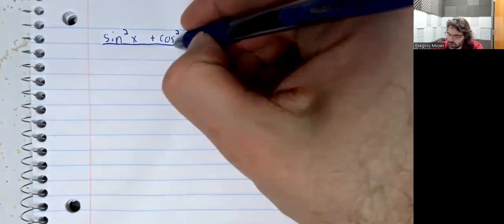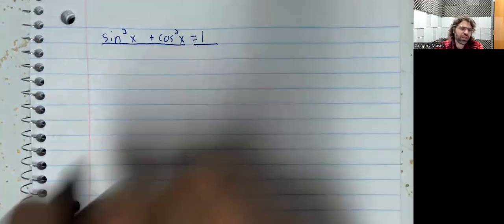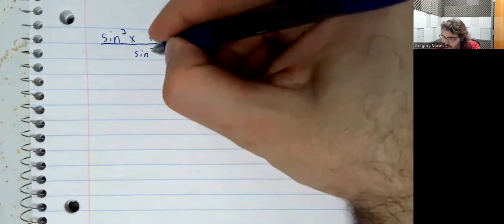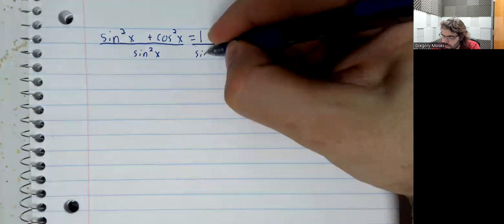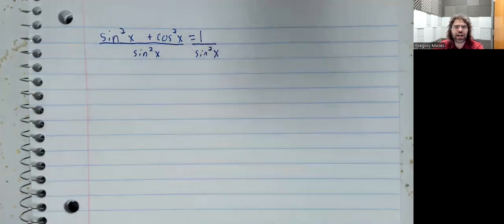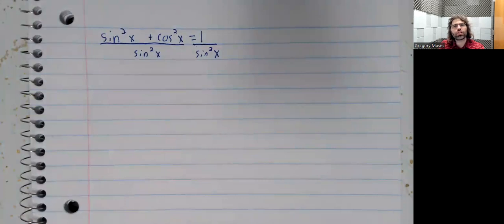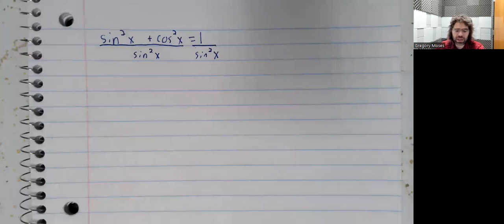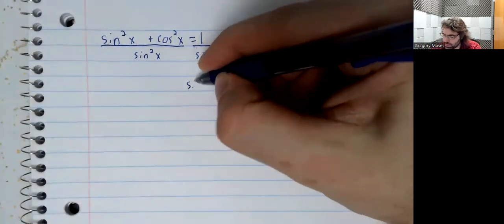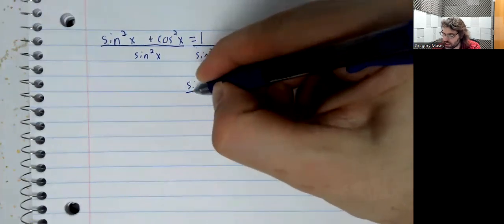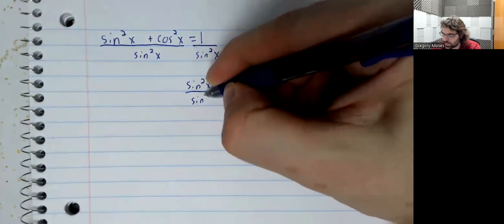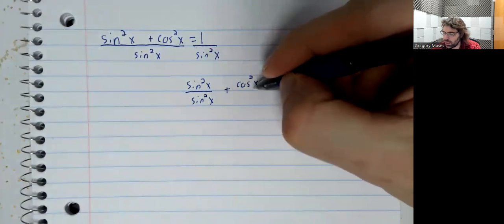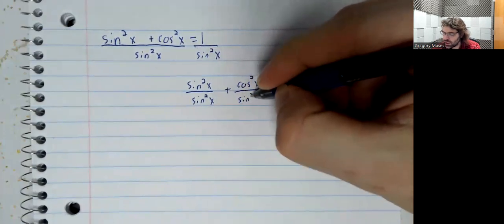And the alternate forms come from saying, what happens if we take each side of this equality and divide it by either the sine squared or the cosine squared? We'll start with the sine squared. What happens? Well, if you have addition in the top, you can break the fraction up like so.